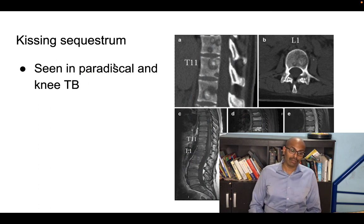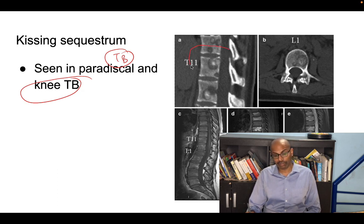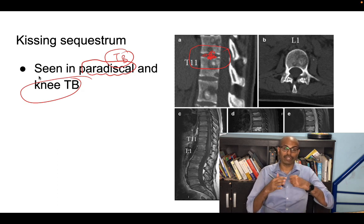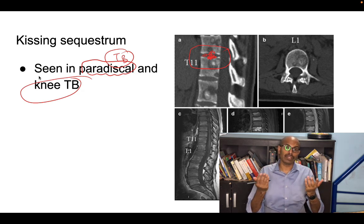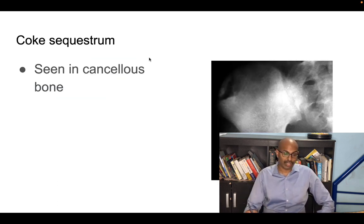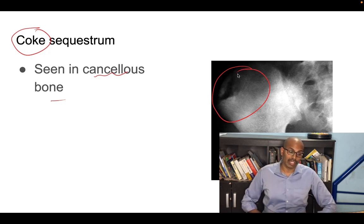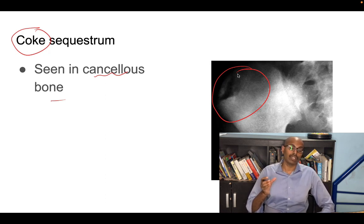Kissing sequestrum is seen in paradiscal tuberculosis and knee tuberculosis. In spinal TB, the lower portion of the upper vertebra and upper portion of the lower vertebra — sharing blood supply — both form sequestrum that touch each other, hence 'kissing.' This is also seen in knee TB, where sequestrum at the lower end of femur and tibia touch each other. Coque sequestrum is seen in cancellous bone, such as in the proximal tibia or iliac wing.